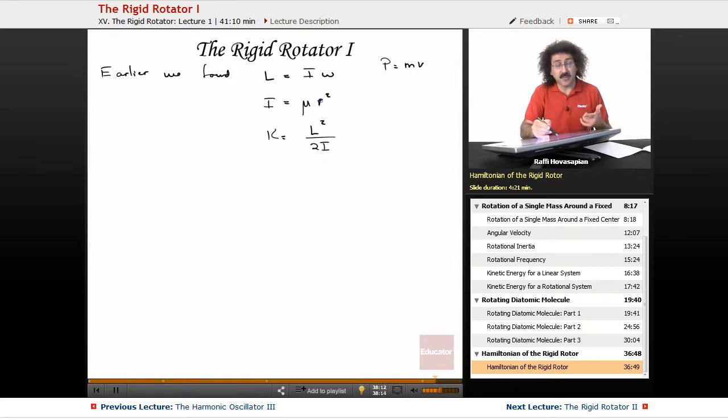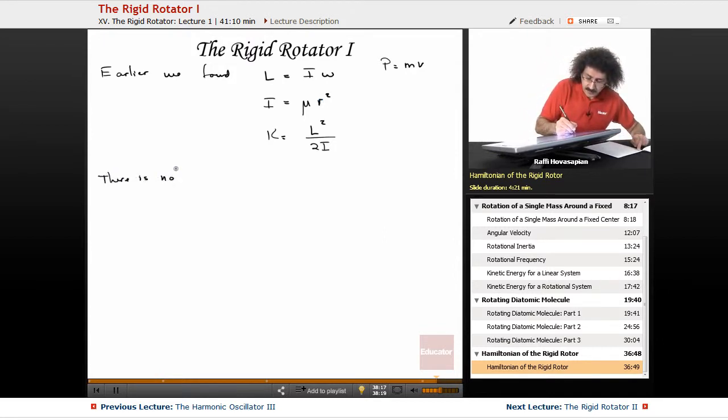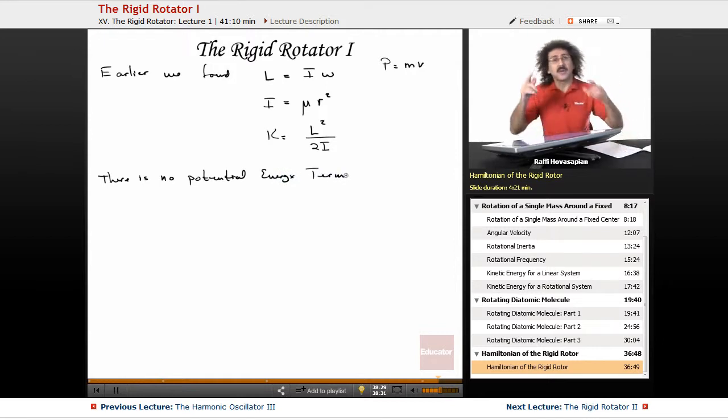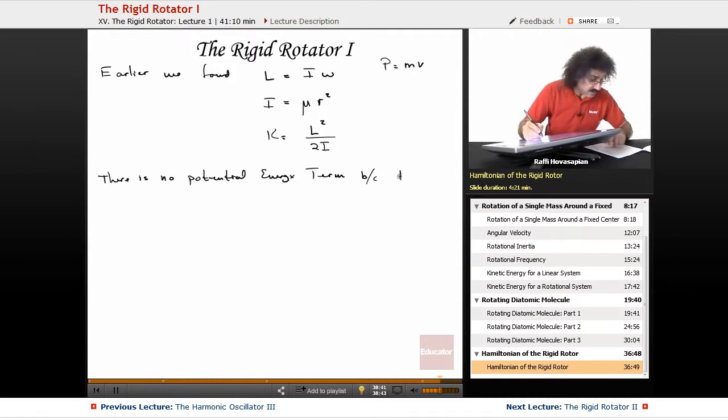And again, the rotational inertia is given by this μr squared. Now, there is no potential energy term. Notice, there is no potential energy term. For some diatomic molecule that's just rotating in free space in any orientation, it actually doesn't matter. There is no potential energy term for this, because there are no external forces on the masses.